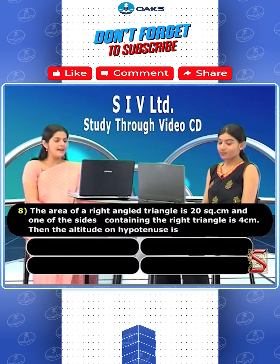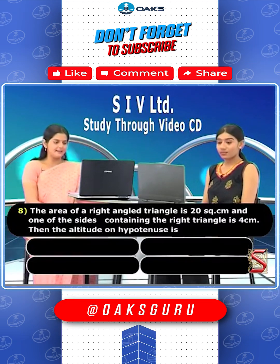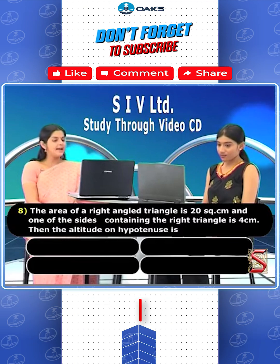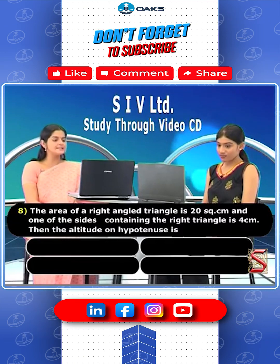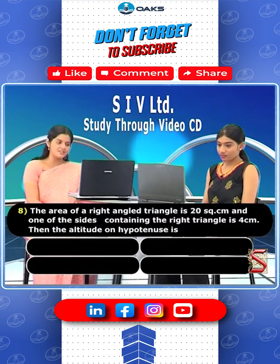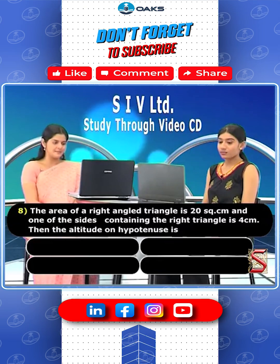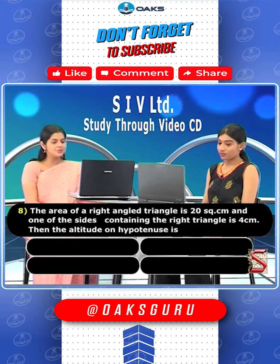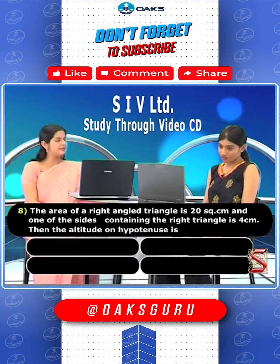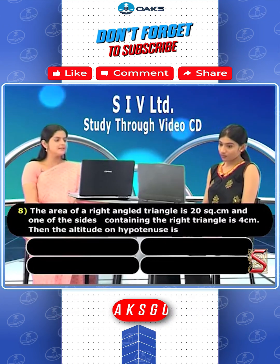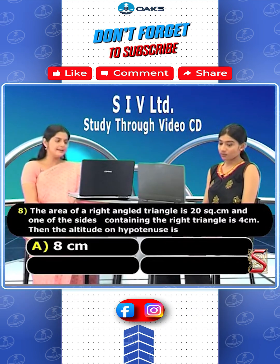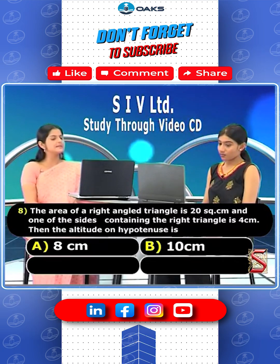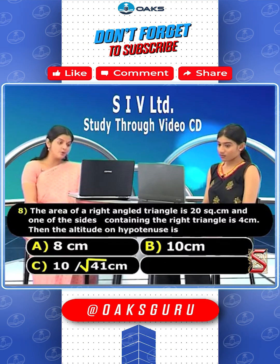The area of a right-angled triangle is 20 square centimeters, and one of the sides containing the right angle is 4 centimeters. Find the altitude on the hypotenuse. The options are: (a) 8 centimeters, (b) 10 centimeters, (c) 10 by root 41 centimeters, and (d) 20 by root 29 centimeters.